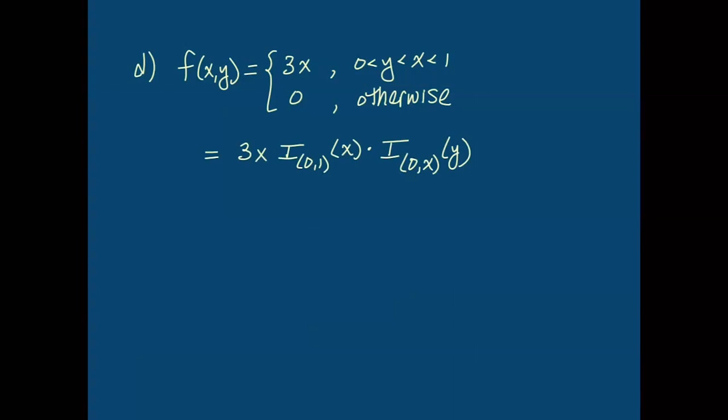Equivalently, we can say that we want Y to be between 0 and 1, and for any fixed Y, we want X to be above Y and below 1. So this is an equivalent expression to write our joint PDF in one line using indicators. Thank you.